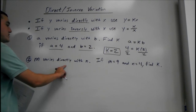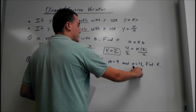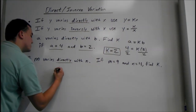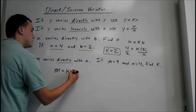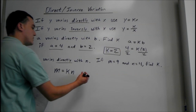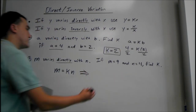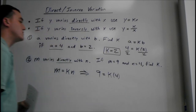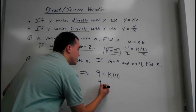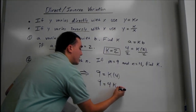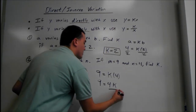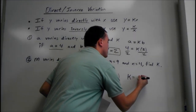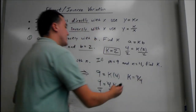For the second problem, m varies directly with n. If m equals 9 and n equals 4, find k. Directly means multiply, so we have m equals k times n. Plugging in: 9 equals k times 4, or 4k. We divide by 4 on both sides, and we get k equals 9 over 4. It's okay to leave it like that — 9 divided by 4 is fine.